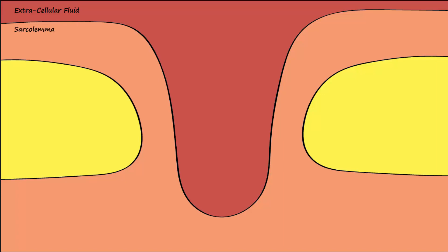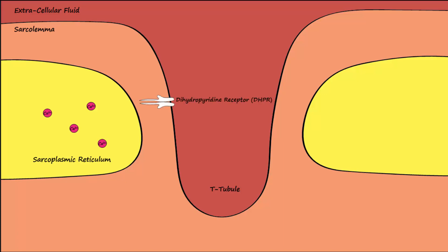The sarcolemma is the plasma membrane of the skeletal muscle. Inside the muscle cell, the sarcoplasmic reticulum stores high concentrations of calcium. The sarcolemma has frequent invaginations, known as T-tubules, that allow action potentials to be propagated toward the interior of the cell. Along the T-tubule, there are dihydropyridine receptors, also known as L-type calcium voltage-gated channels. Coupled to these channels, but embedded in the sarcoplasmic reticular membrane, are other calcium channels called ryanodyne receptor channels.